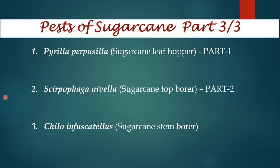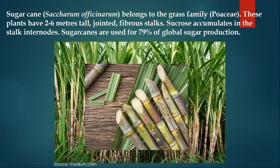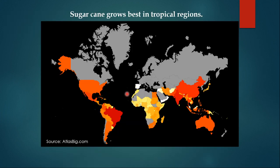You can find the links of those videos in the description box. Sugarcane is one of the most important crops worldwide. The scientific name of sugarcane is Saccharum officinarum. It belongs to the grass family, Gramineae or Poaceae. The plants grow up to 2 to 6 meters and they have jointed and fibrous stalks. Sucrose accumulates in the stalk internodes and this sucrose is extracted for sugar production. Sugarcane is used for 79% of global sugar production. Here is a map of sugarcane cultivation distribution — you can see that sugarcane is cultivated in many countries. India is one of the major producers of sugarcane, and this map should give you the idea of how important sugarcane is for the agricultural economy.